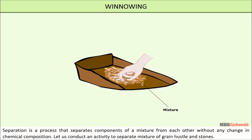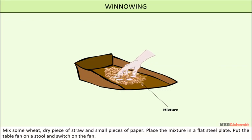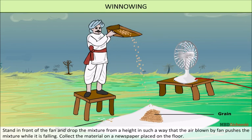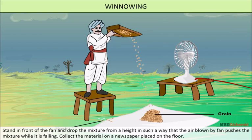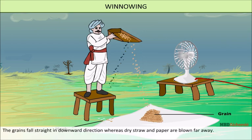Let us conduct an activity to separate a mixture of grain, husk, and stones. Mix some wheat, dry pieces of straw, and very small pieces of paper. Place the mixture in a flat steel plate. Put a table fan on a stool and switch it on. Stand in front of the fan and drop the mixture from a height so that the air blown by the fan pushes the mixture while it is falling. Collect the materials on a newspaper placed on the floor. The grains fall straight in the downward direction, whereas dry straw and paper are blown far away.